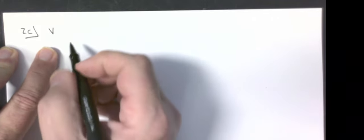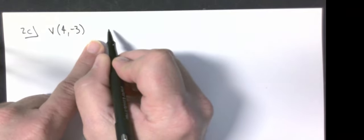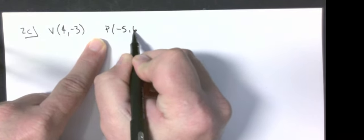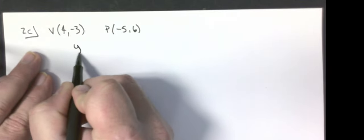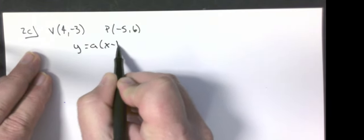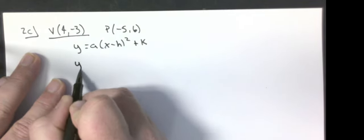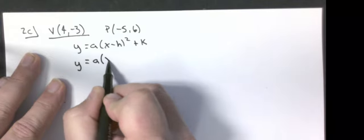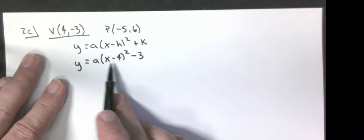For problem 2C, we have a vertex at (4, -3) and the parabola goes through the point (-5, 6). We want to find an equation in vertex form: y equals a times x minus h squared plus k. Using the vertex, I get y equals a times x minus 4 squared, minus 3.